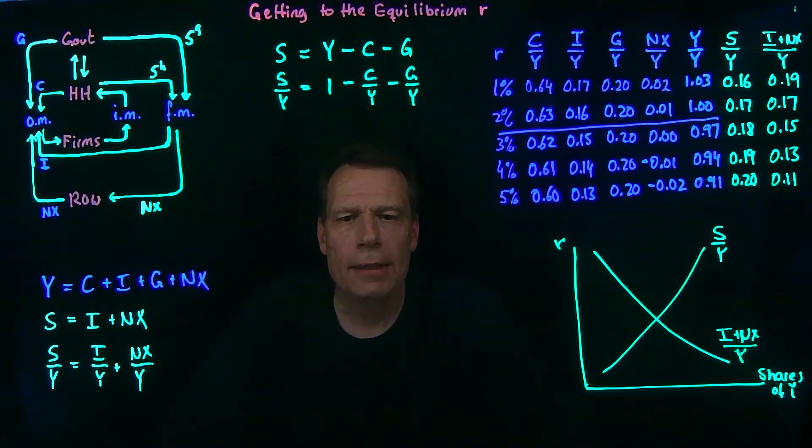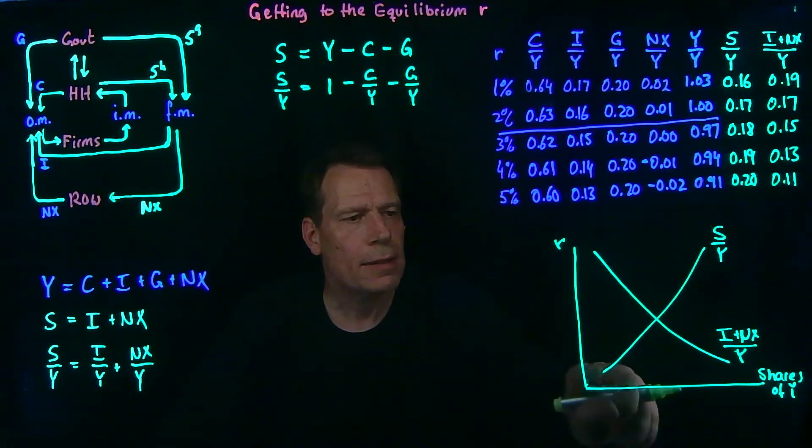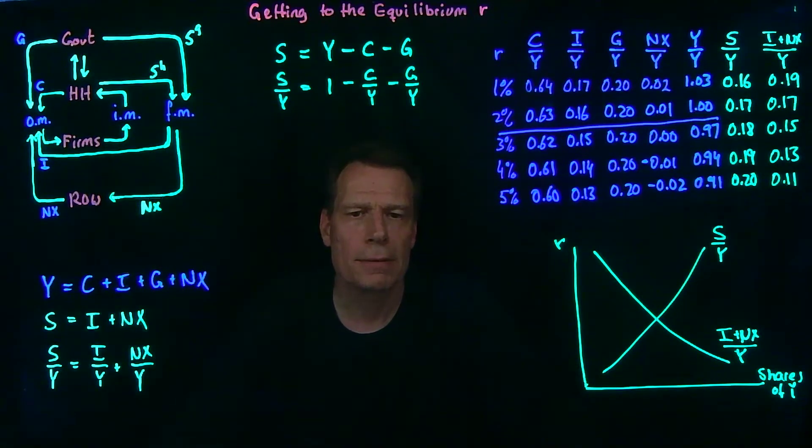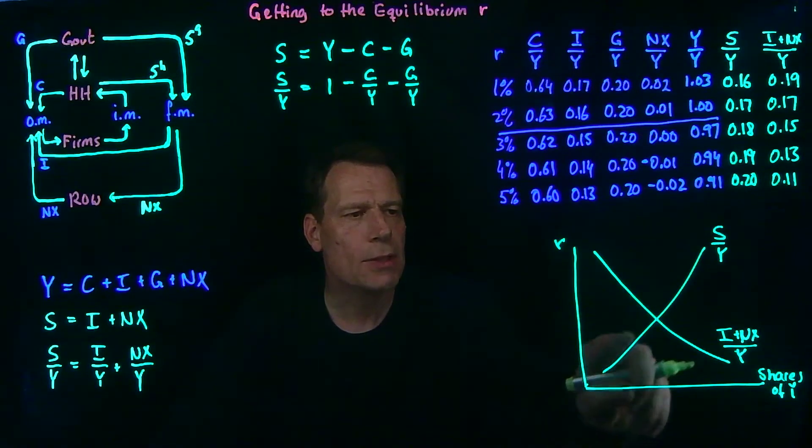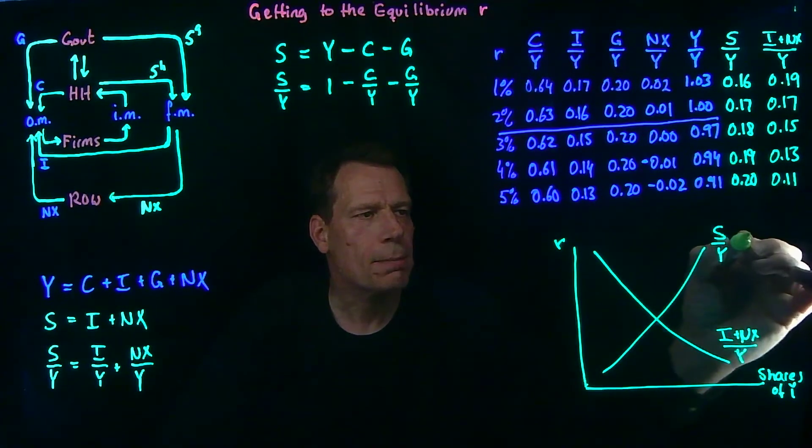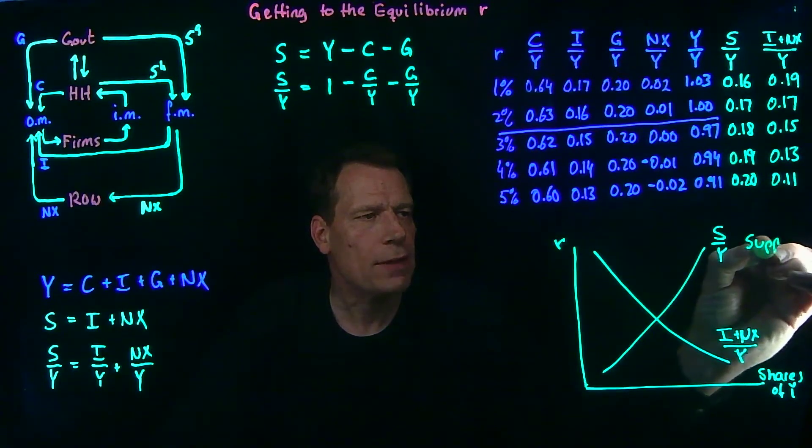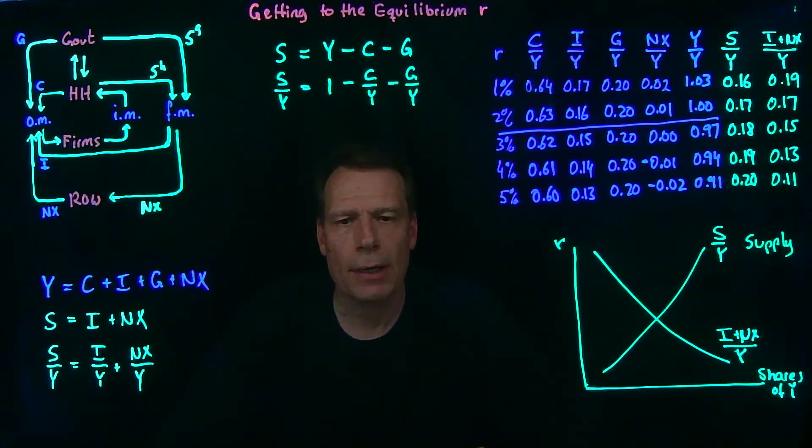Now that looks a lot like a demand and supply graph. And that's exactly what it is. This curve represents the inflow of savings into financial markets. And that inflow increases as the real interest rate rises. It is the supply curve for savings going into financial markets.